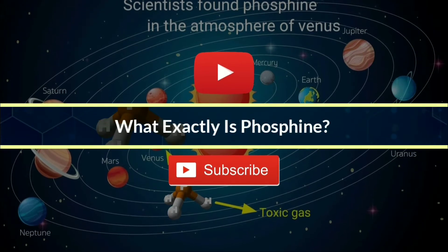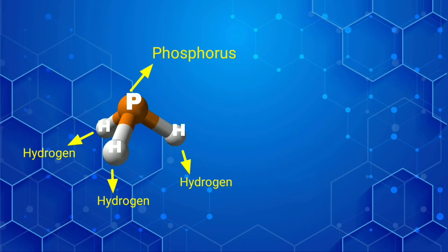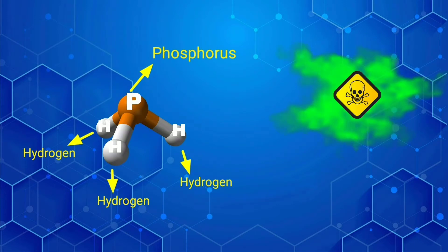What exactly is phosphine? Phosphine is a pyramid-shaped molecule with a phosphorus atom on the top and three hydrogen atoms in the base. It is very toxic and quite rare on Earth.